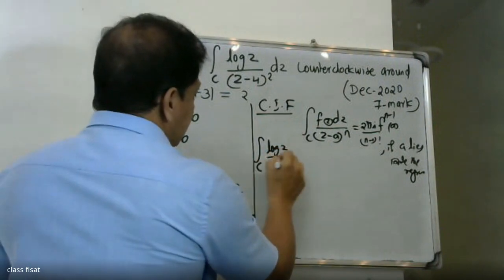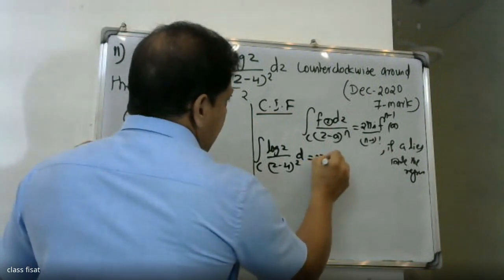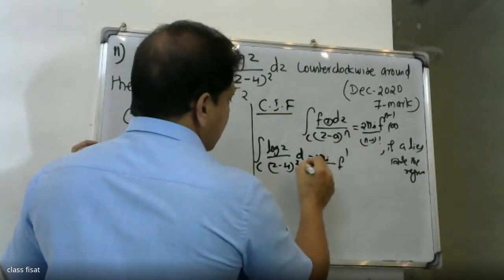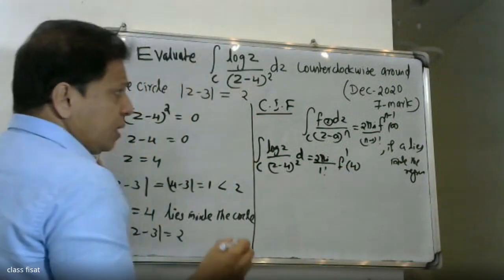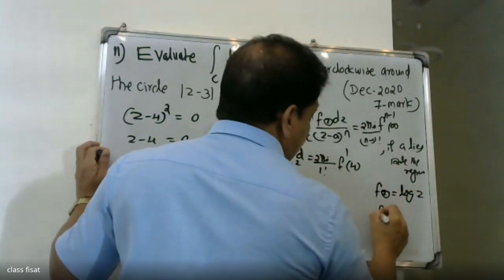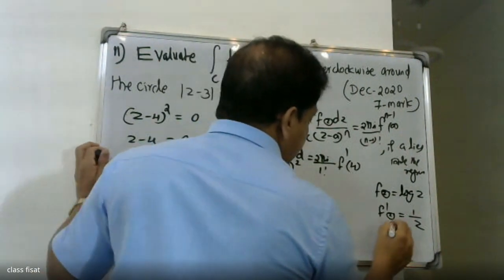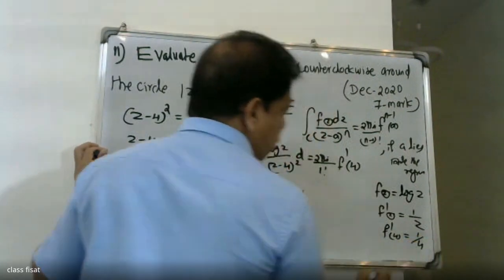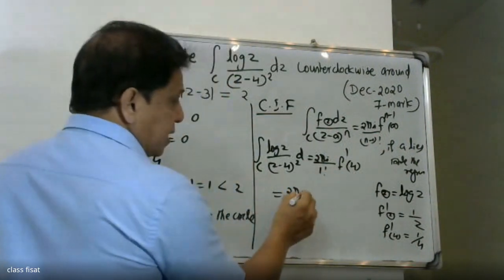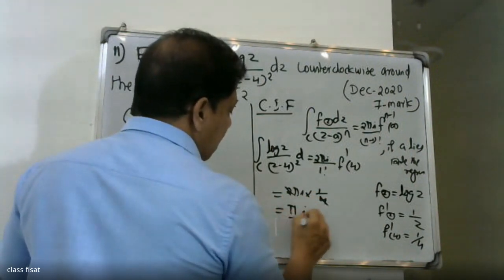Applying the formula: the integral of C log(z) divided by (z minus 4) squared dz equals 2πi divided by (2 minus 1) factorial, multiplied by f dash evaluated at a equals 4. Here f(z) equals log(z), so f dash (z) equals 1/z, therefore f dash (4) equals 1/4.